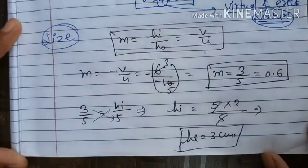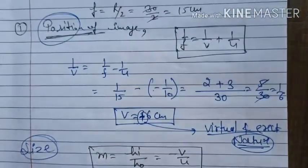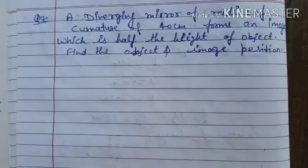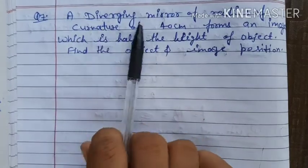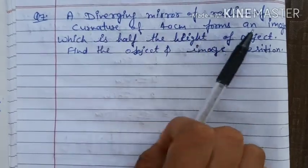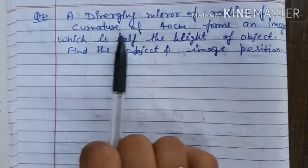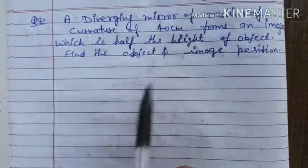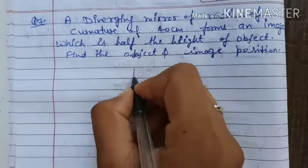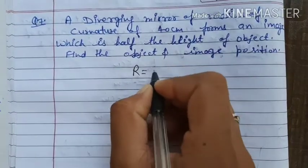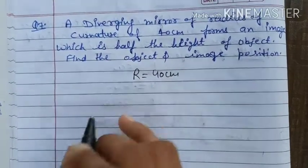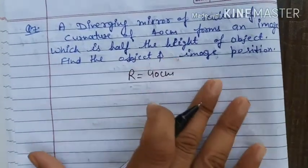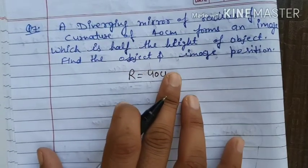Question number seven: a diverging mirror (convex mirror) has a radius of curvature of 40 centimeters, and it forms an image which is half the height of the object. We need to find the object distance u and image distance v.